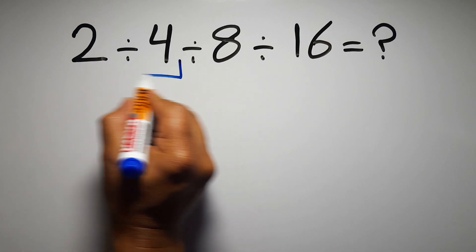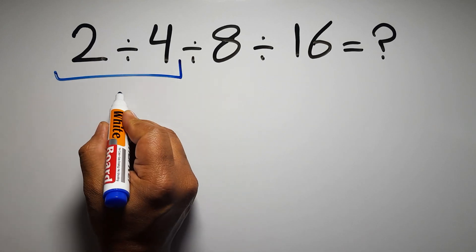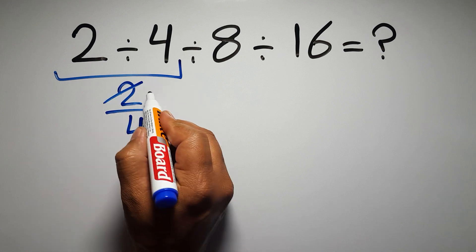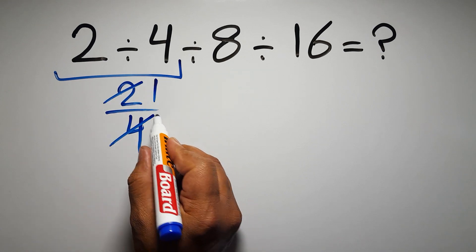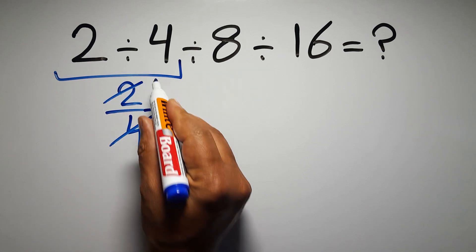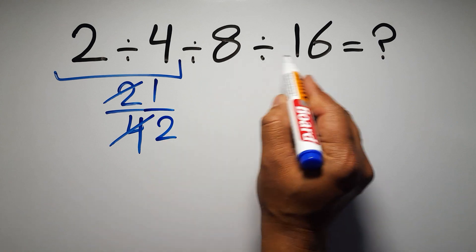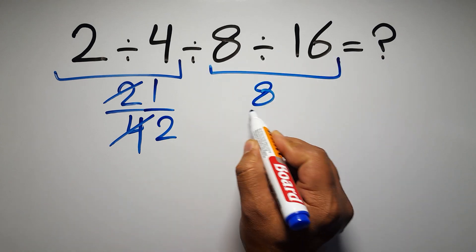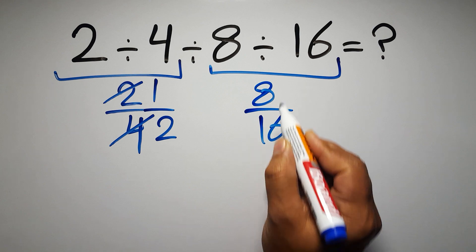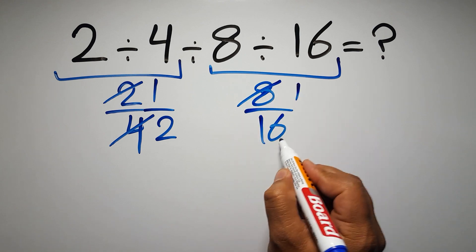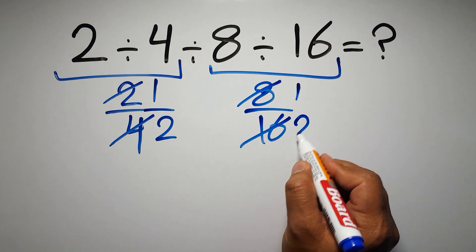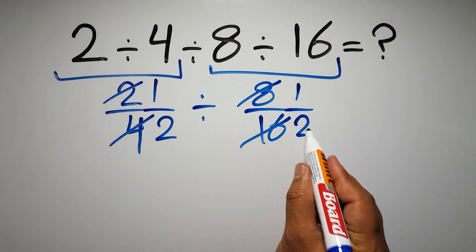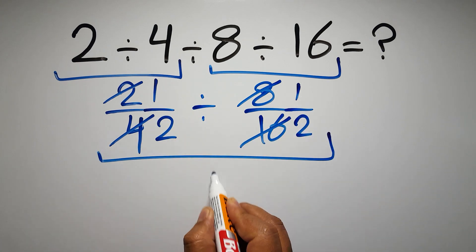2 divided by 4 can be written as 2 over 4. 2 divided by 2 gives us 1, and 4 divided by 2 gives us 2, so we have 1 over 2. And here we have 8 divided by 16, which can be written as 8 over 16. 8 divided by 8 gives us 1, and 16 divided by 8 gives us 2, so we have 1 over 2 divided by 1 over 2, which equals 1.